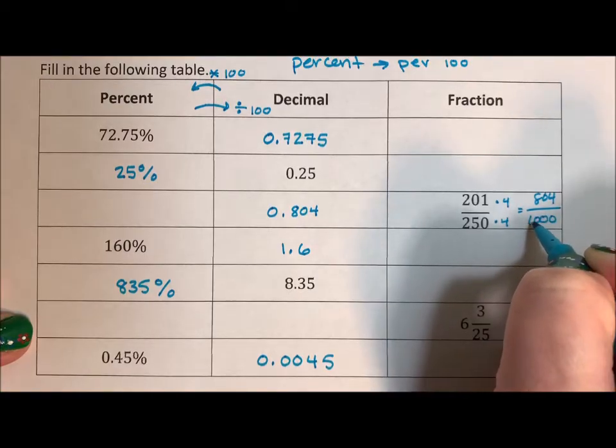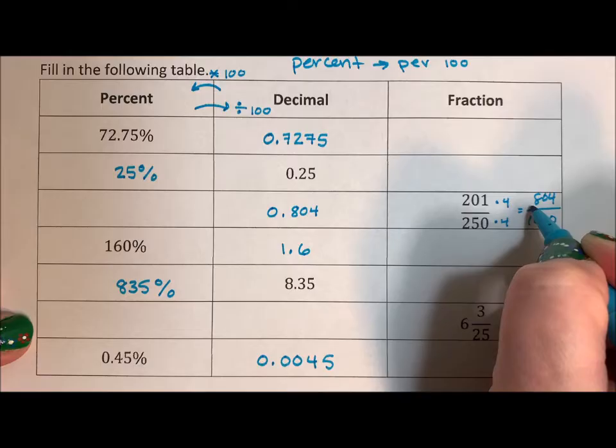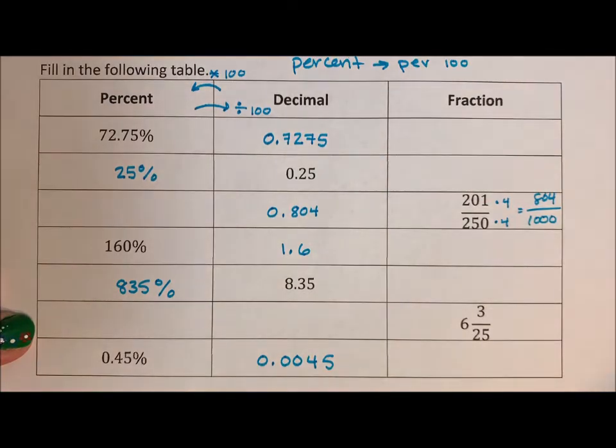1000 is three zeros. So we move the decimal back three spots and we would get 0.804.